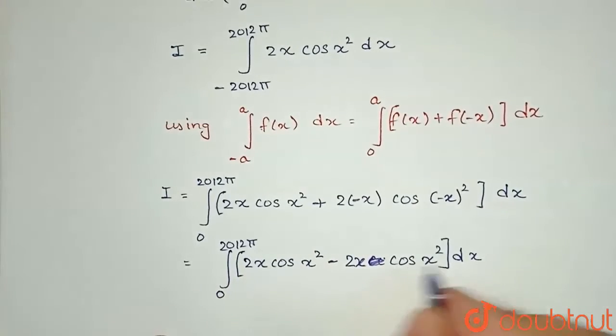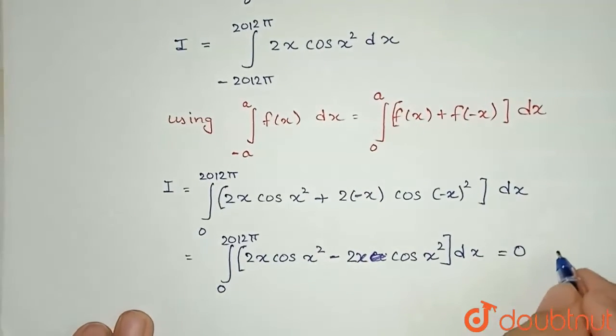If you see, these two terms cancel each other and I am getting zero, which is given to me in option C.